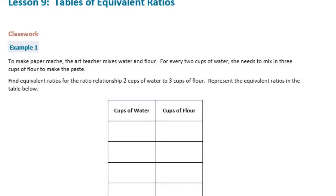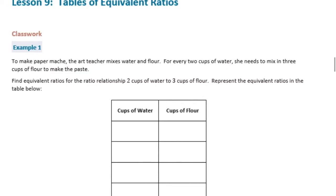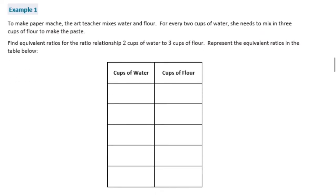6th grade, module 1, lesson 9, classwork. Example 1. To make paper mache, the art teacher mixes water and flour. For every 2 cups of water, she needs to mix in 3 cups of flour to make the paste. Find equivalent ratios for the relationship 2 cups of water to 3 cups of flour. Represent the equivalent ratios in the table below. So let's start with what we know.